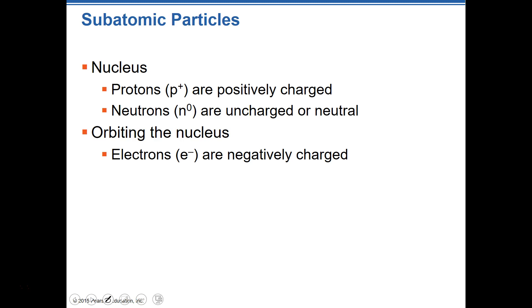Orbiting around the nucleus are electrons, which are negatively charged. It may seem silly to talk about atoms, protons, neutrons, and electrons in an anatomy class, but our body is all about chemistry. Once we talk about these things and refresh your memory on them, you'll start to understand why it's important that we revisit this material.